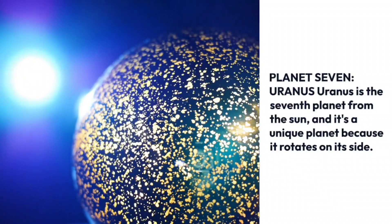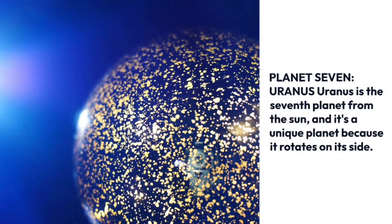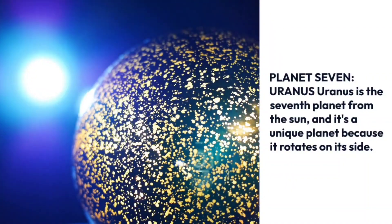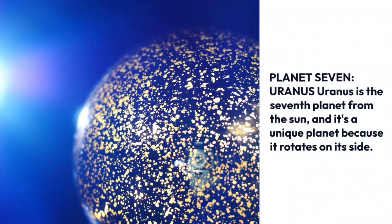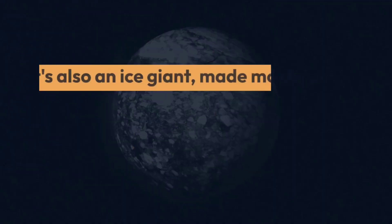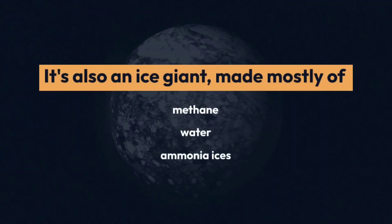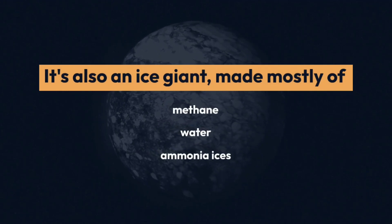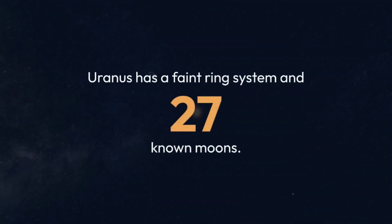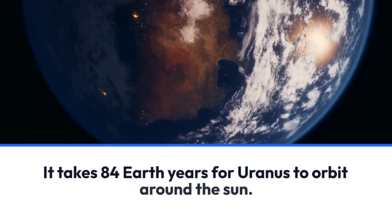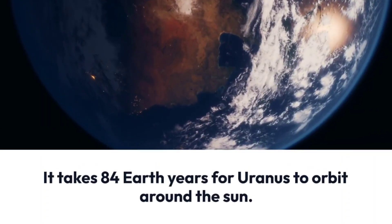Planet 7: Uranus. Uranus is the seventh planet from the sun, and it's a unique planet because it rotates on its side. It's also an ice giant, made mostly of methane, water, and ammonia ices. Uranus has a faint ring system and 27 known moons. It takes 84 Earth years for Uranus to orbit around the sun.